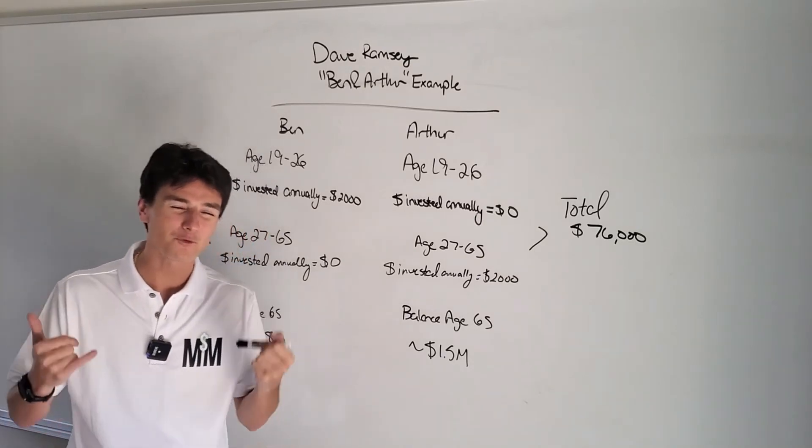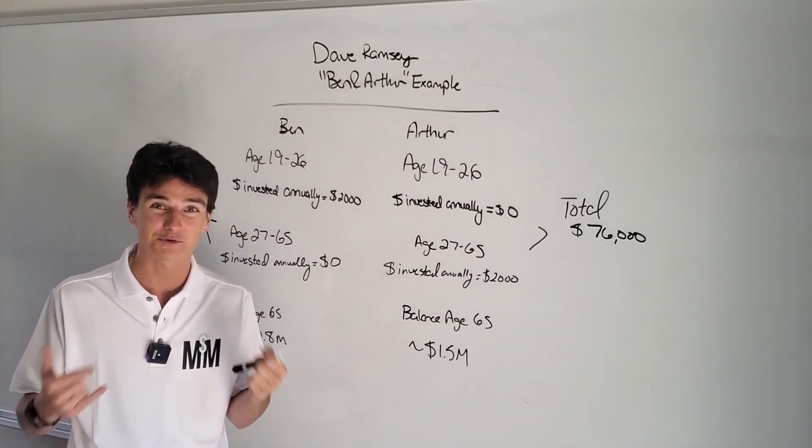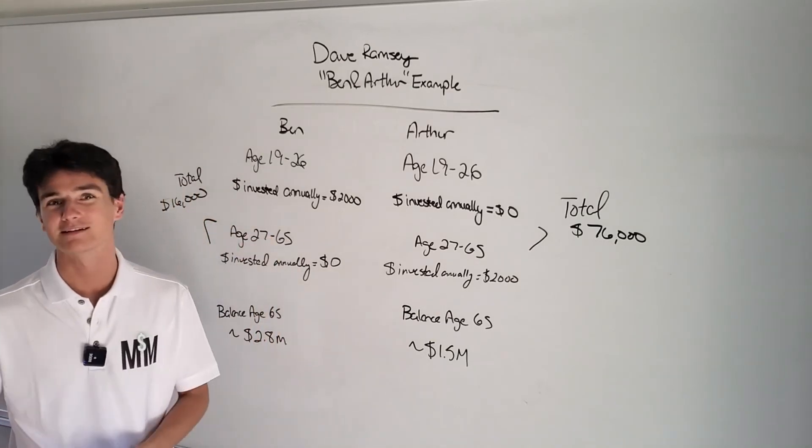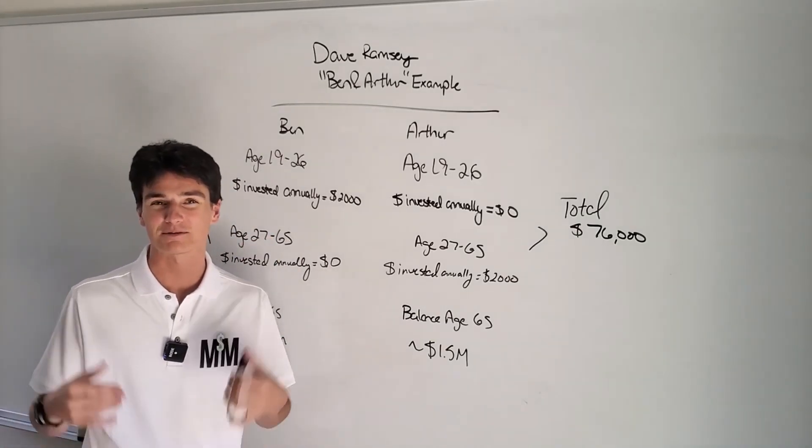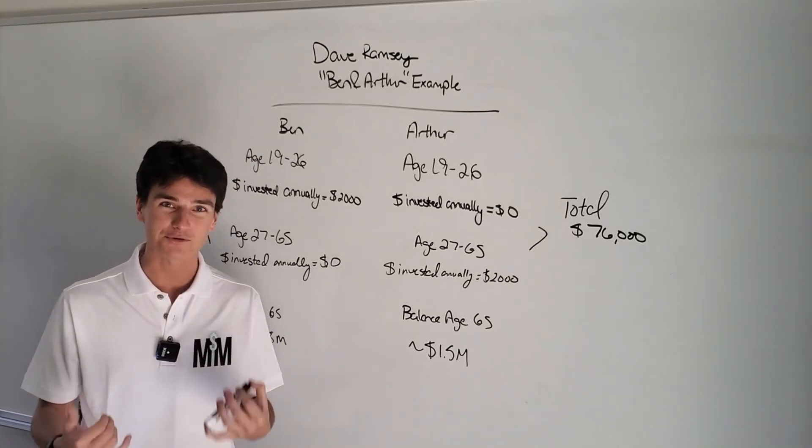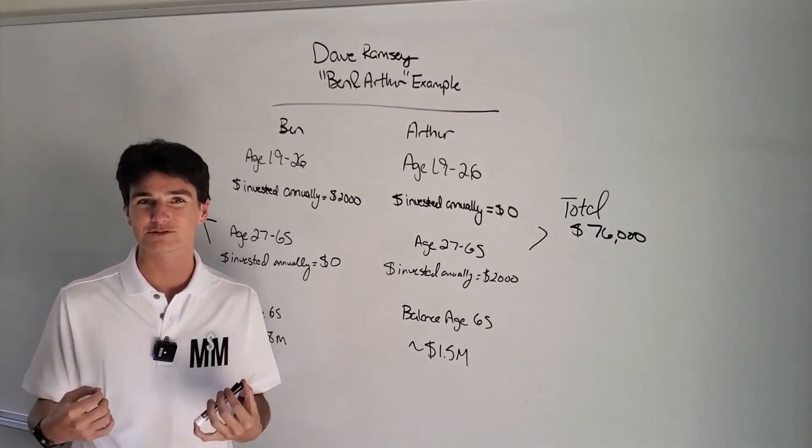Think about that for a minute. You put four times less amount of your own money in, and you get twice out of it just because you started early. That's what's amazing about compound interest, how much time, when do you start, starting early. That's why at our age, we need to start early.